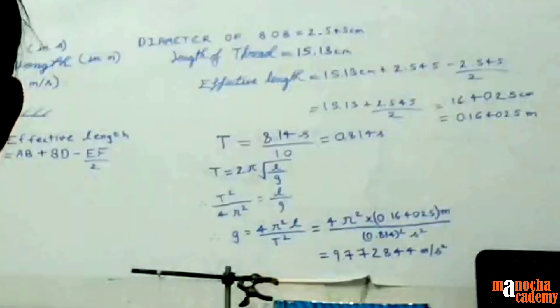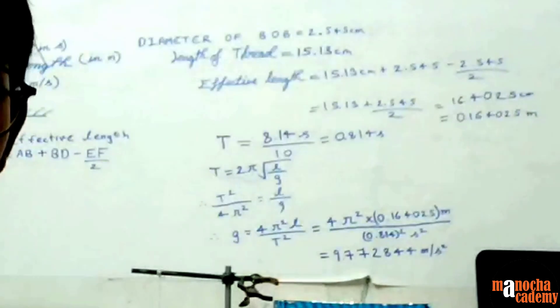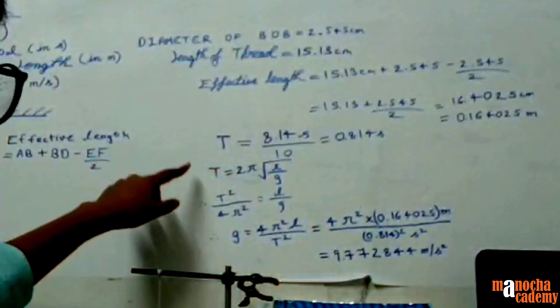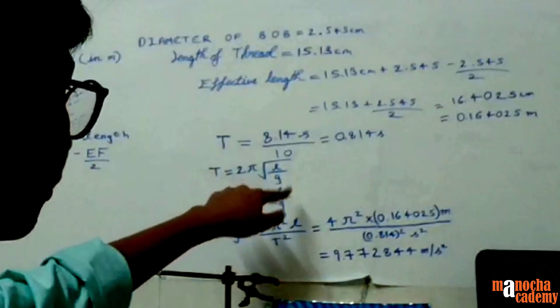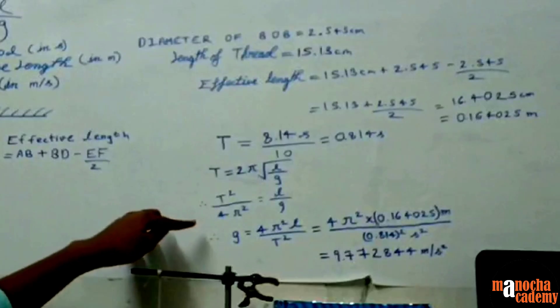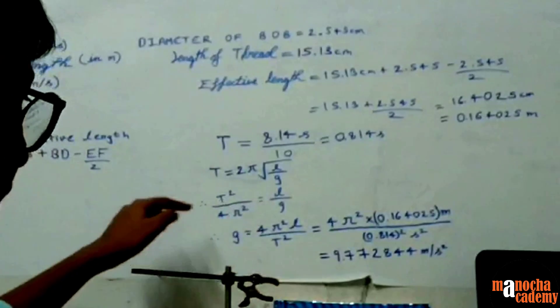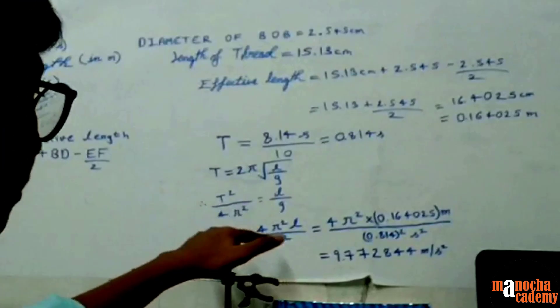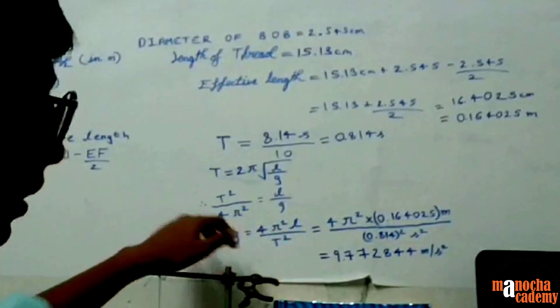For substituting the values, we can first simplify the formula a bit. So the formula is T = 2π√(L/g). So it will be T² / 4π² = L/g. So g is equal to 4π² × L divided by T².